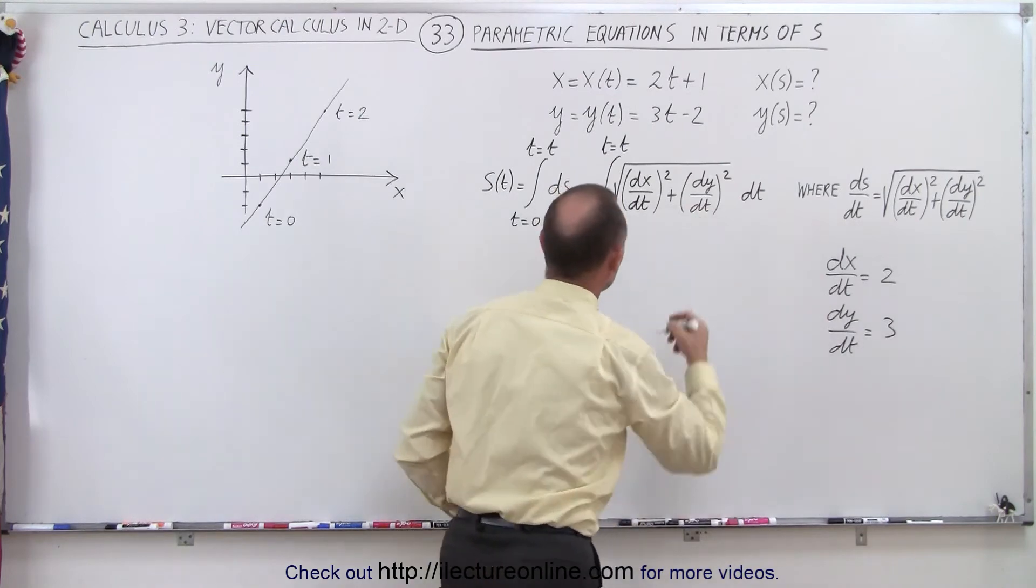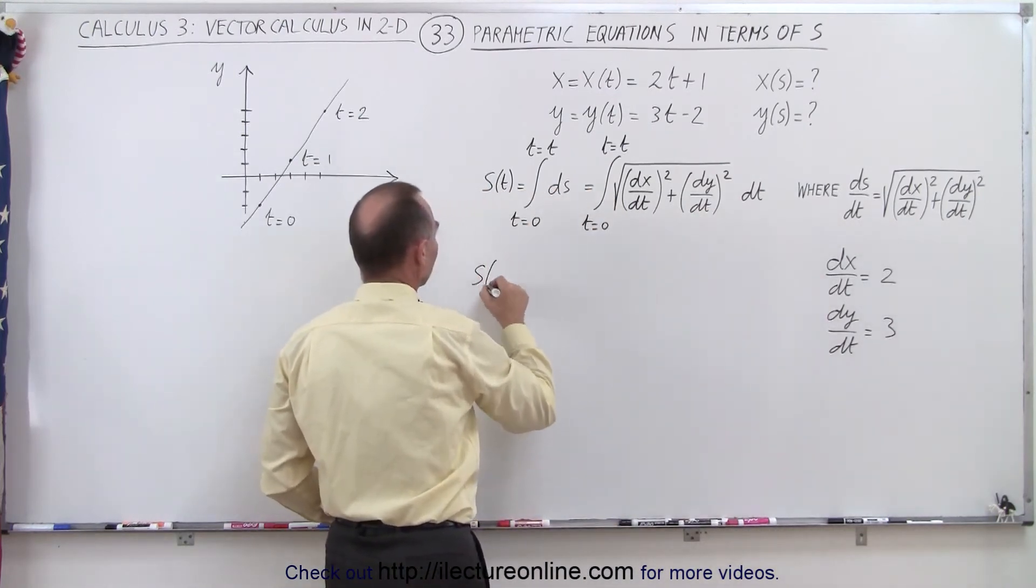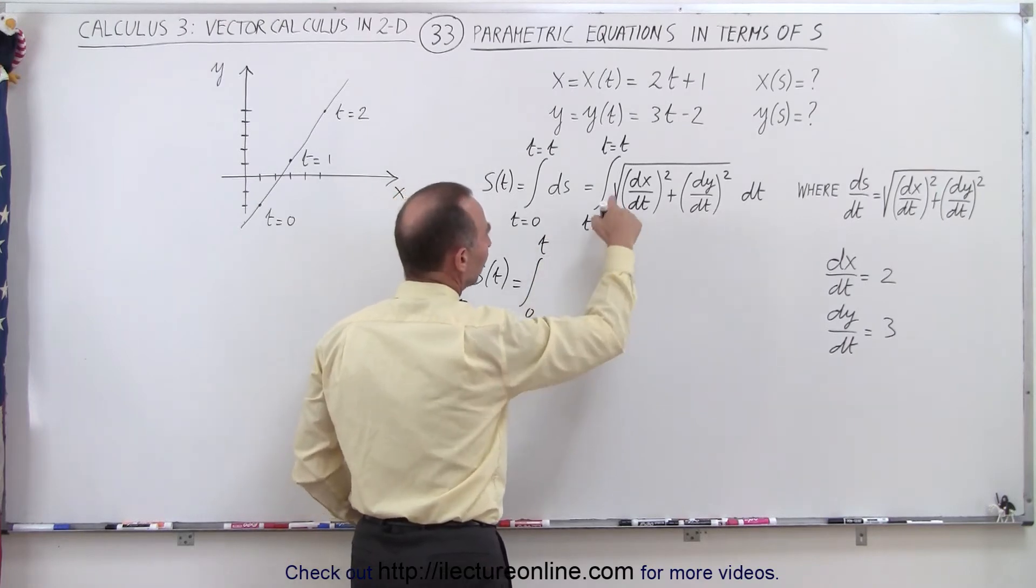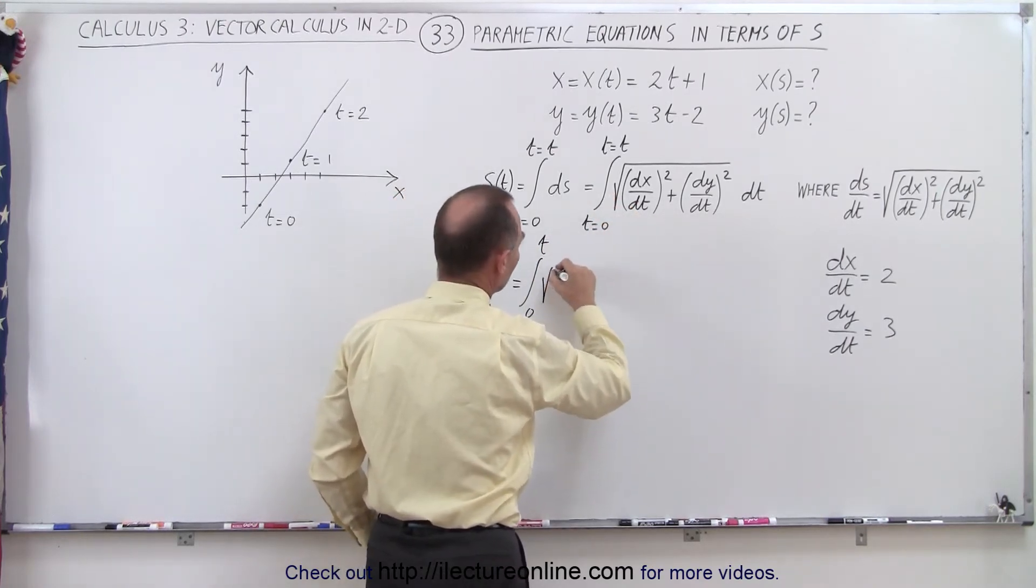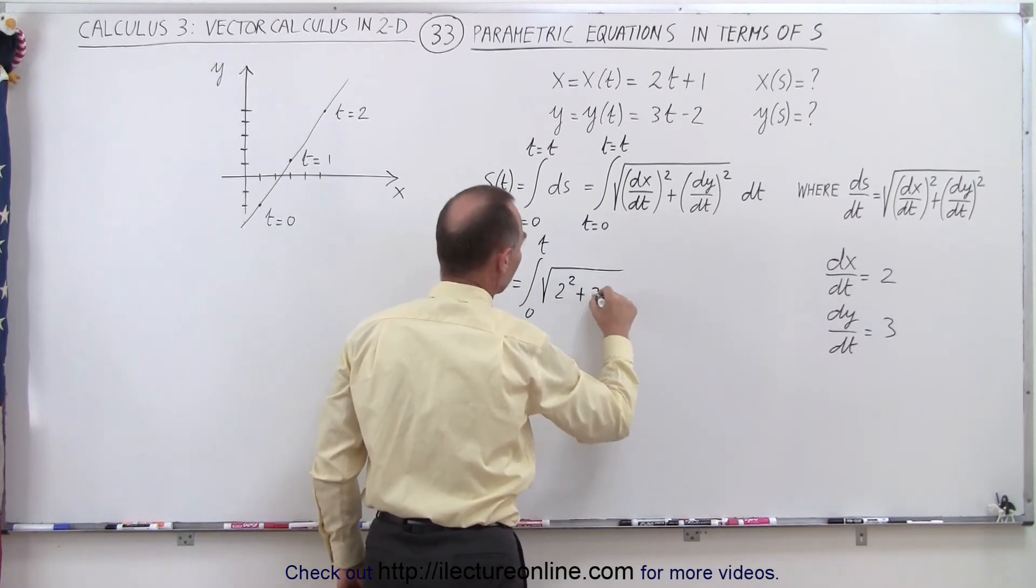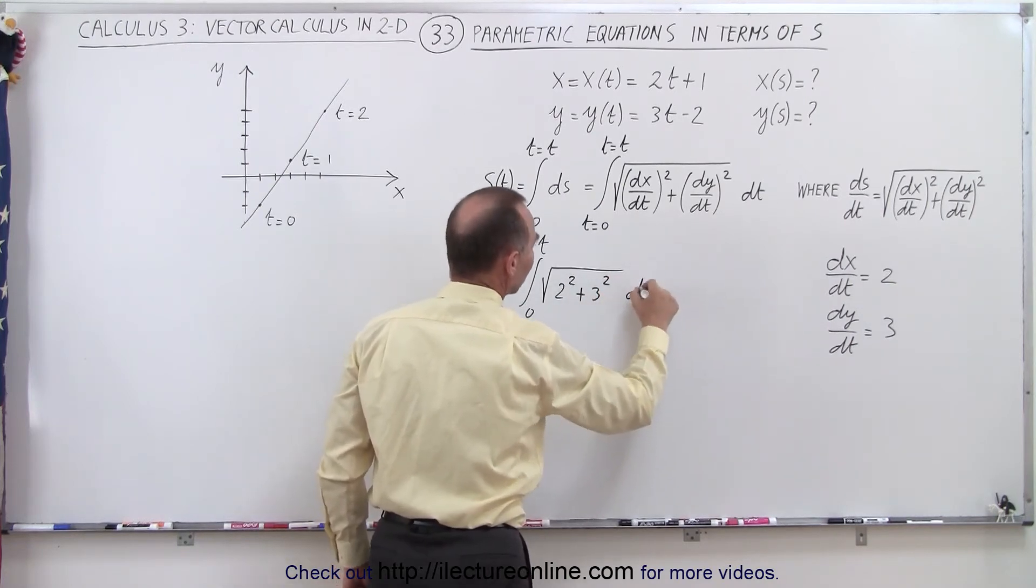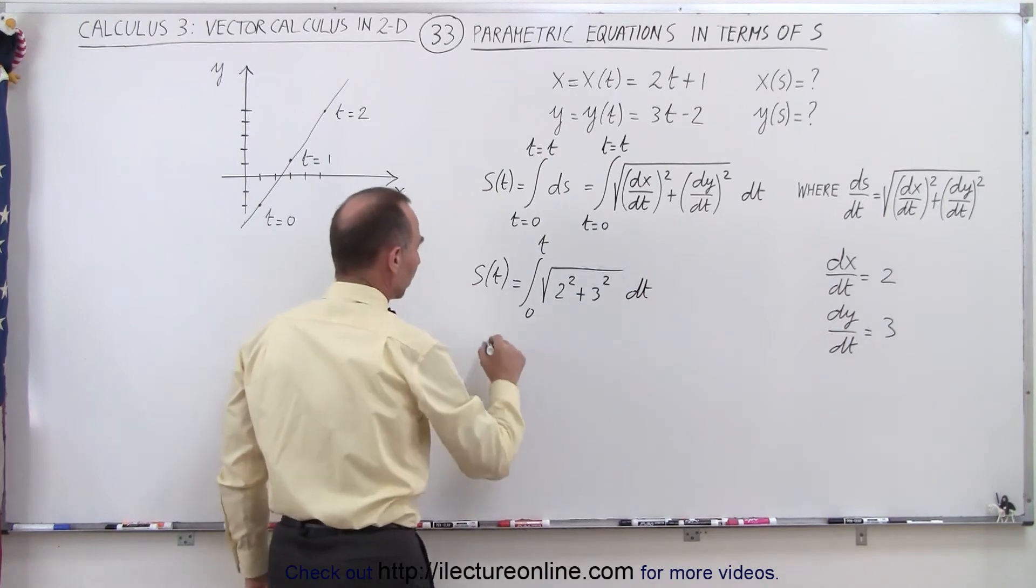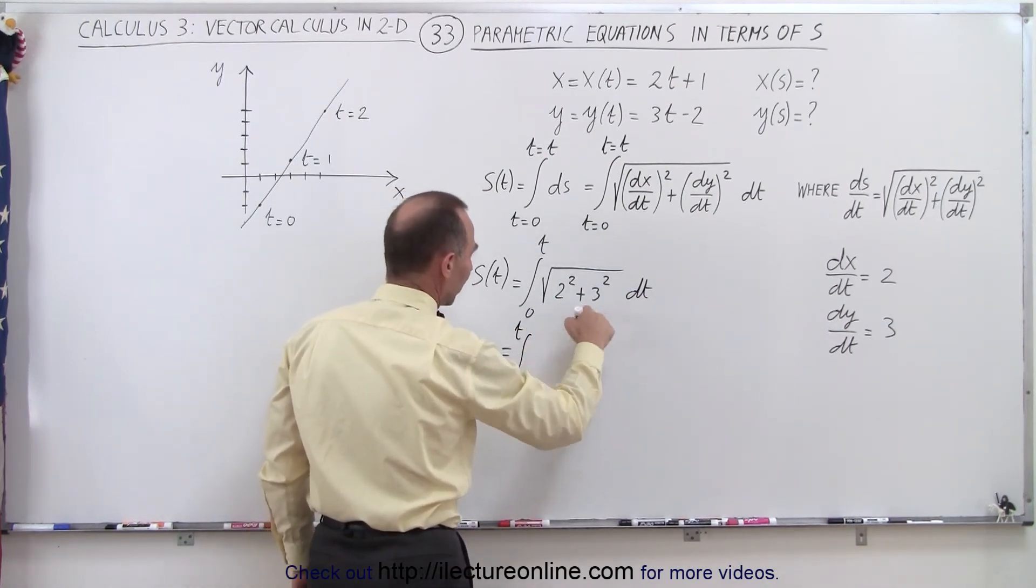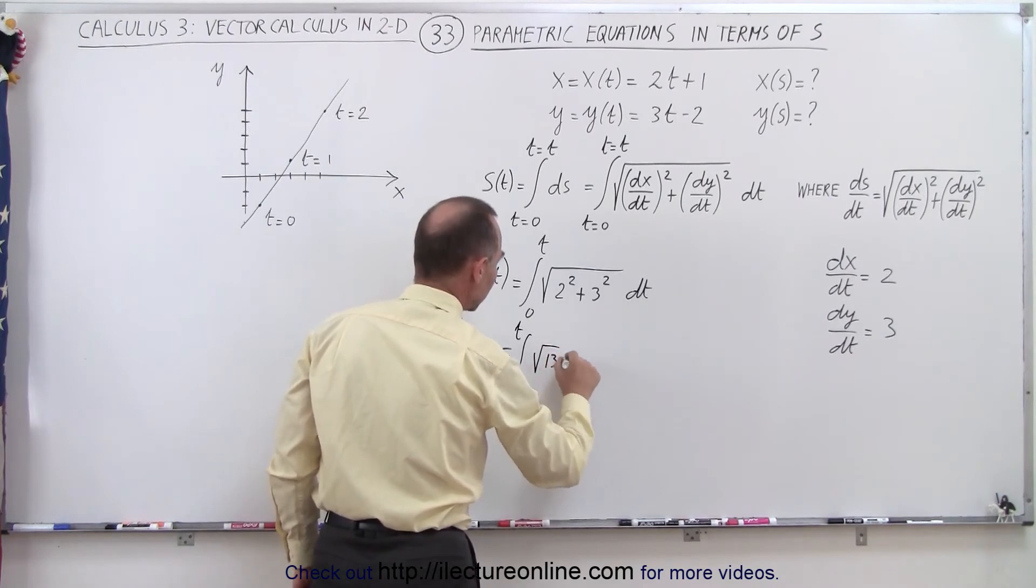So now what we're doing is we're going to plug that in here so we know that s as a function of t is equal to the integral from 0 to t of the square root of (dx/dt)², so it's 2² plus 3² times dt. And so this is equal to the integral from 0 to t. That's 4 plus 9, that's the square root of 13 times dt.